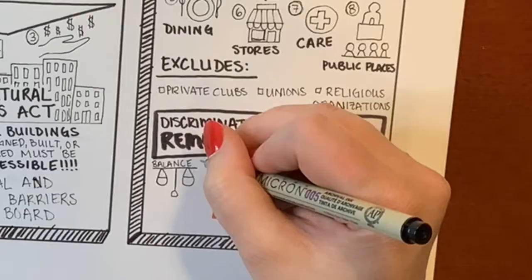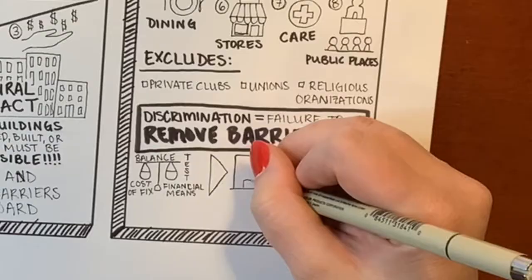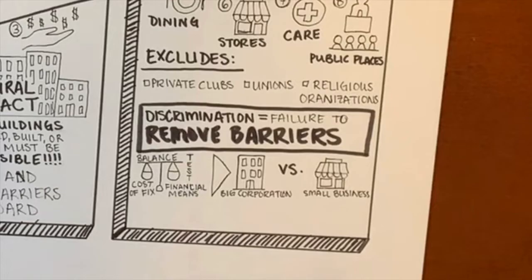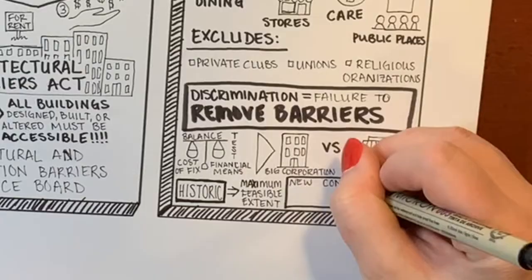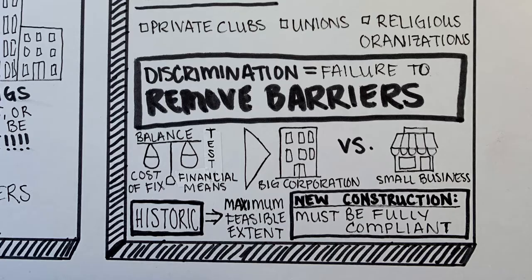Discrimination under Title III includes the failure to remove architectural barriers like steps in existing facilities, especially when those barriers are relatively easy to remove without much difficulty or expense. They use a balance test, looking at the difference between the cost of the proposed fix and the financial means of the business — so a change that might be easy for a large corporation might be too expensive for a small local business. As for historic buildings, they have to make as many fixes as possible without destroying the historic significance of the building, but any new construction done after the ADA took effect has to be fully compliant.